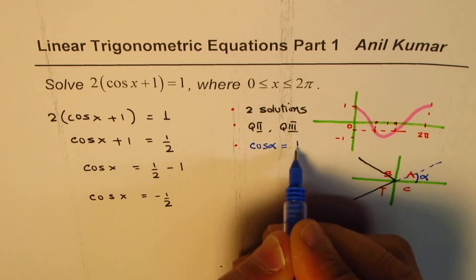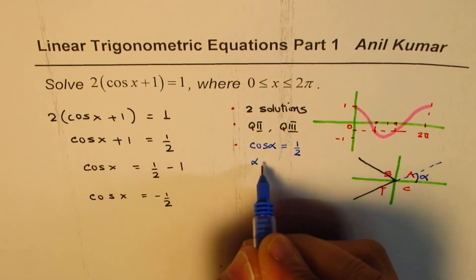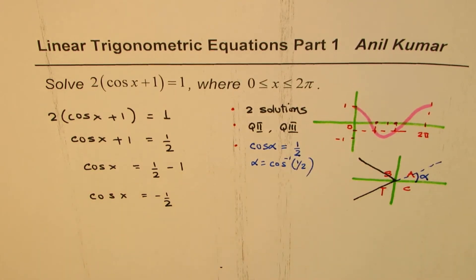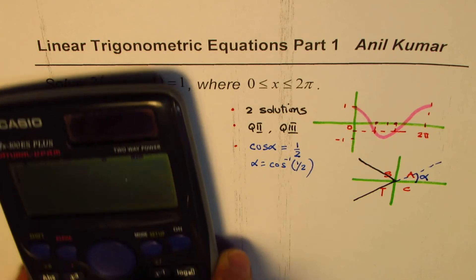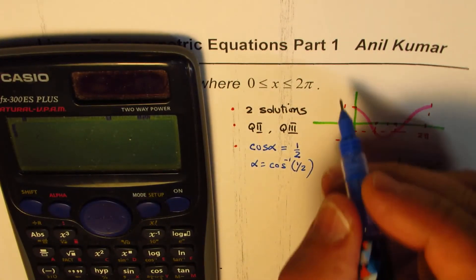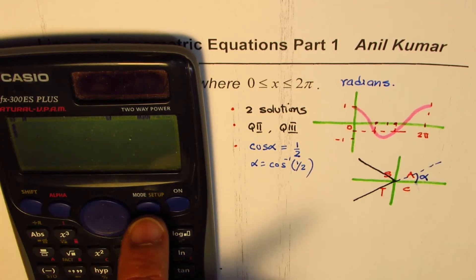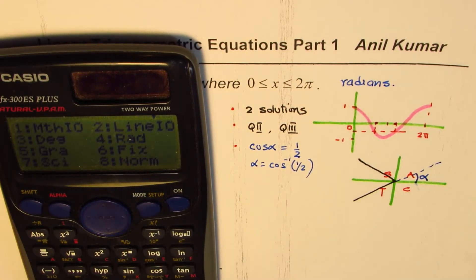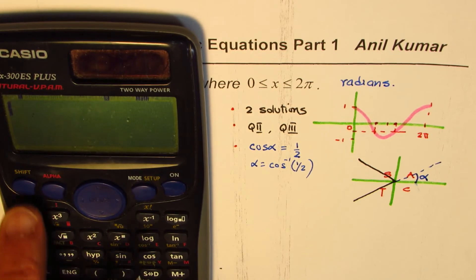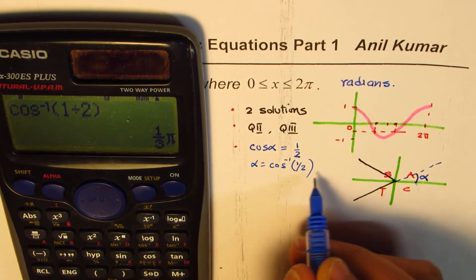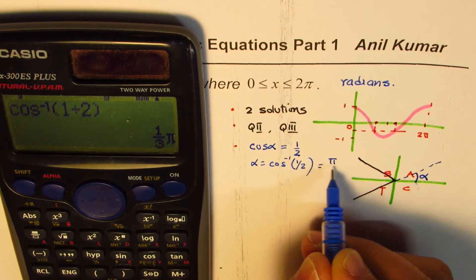So we could do α = cos inverse of 1/2. Let's use the calculator to figure this out. The setting should be in radians. So shift, let us set this to radians, and then we do cos inverse of 1/2 or 0.5. We'll do 1 divided by 2.